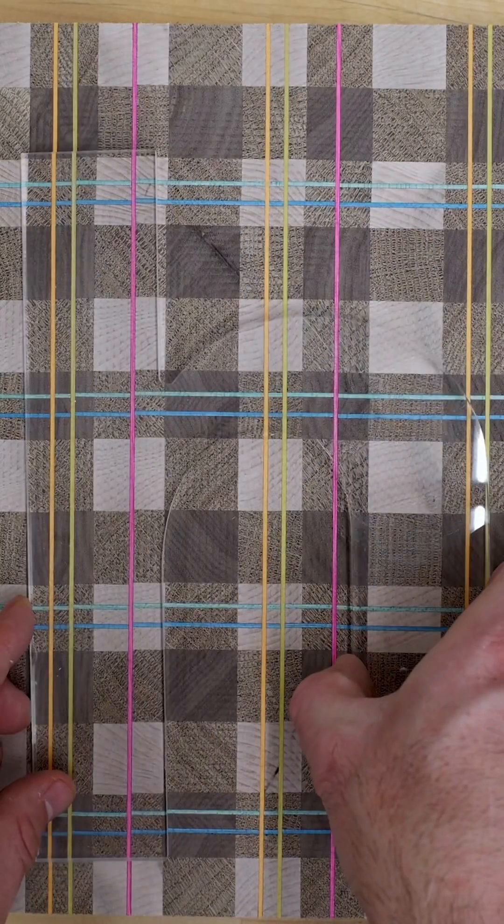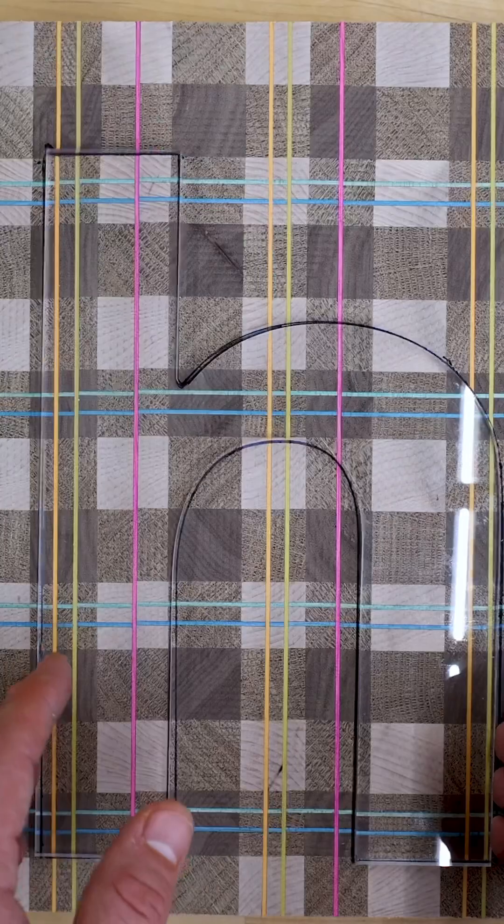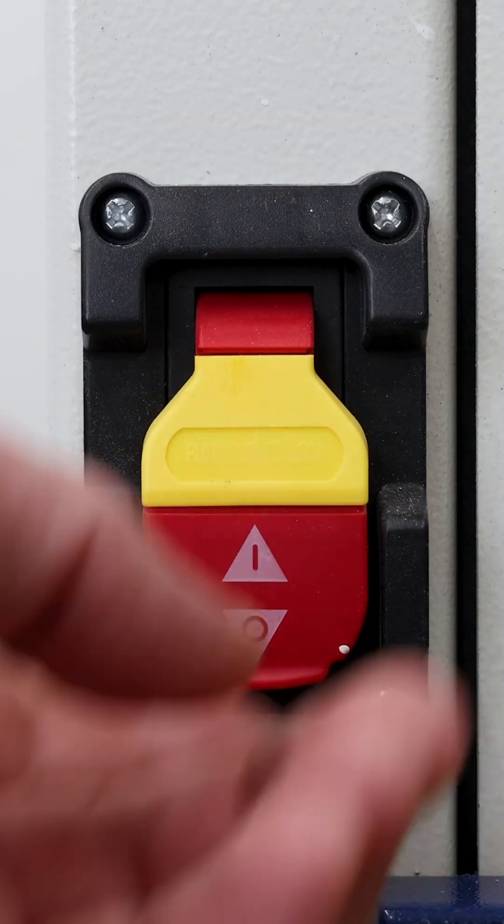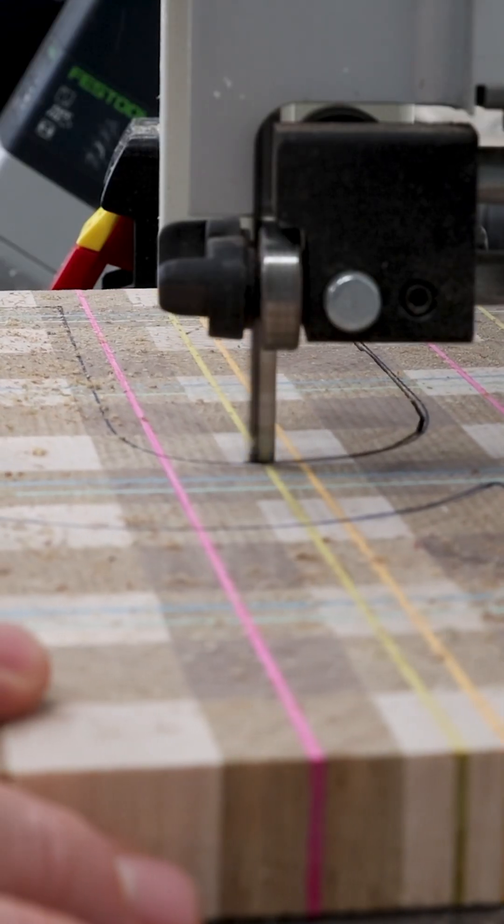Next, let's position our letter exactly where we want it and trace the entire thing. Now we'll fire up the band saw and cut slightly outside of our trace line.